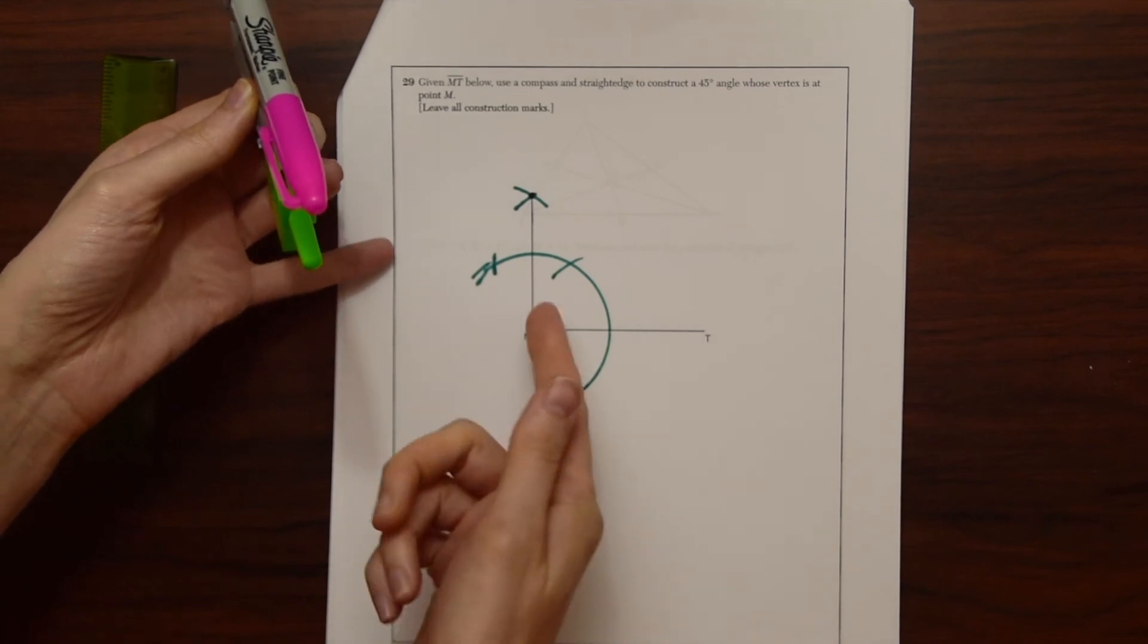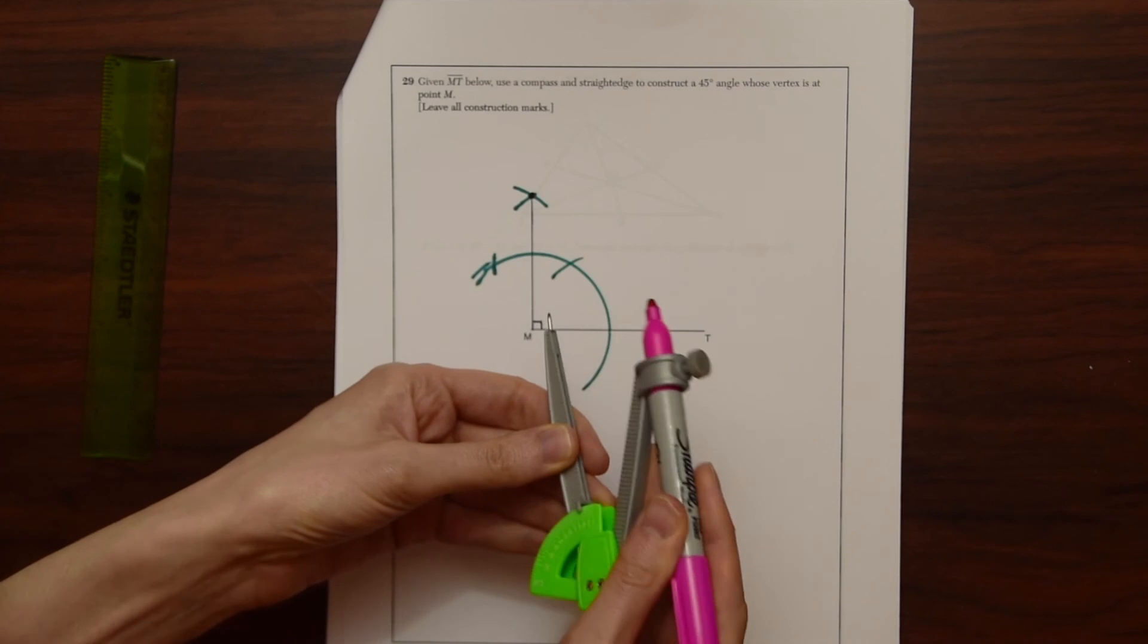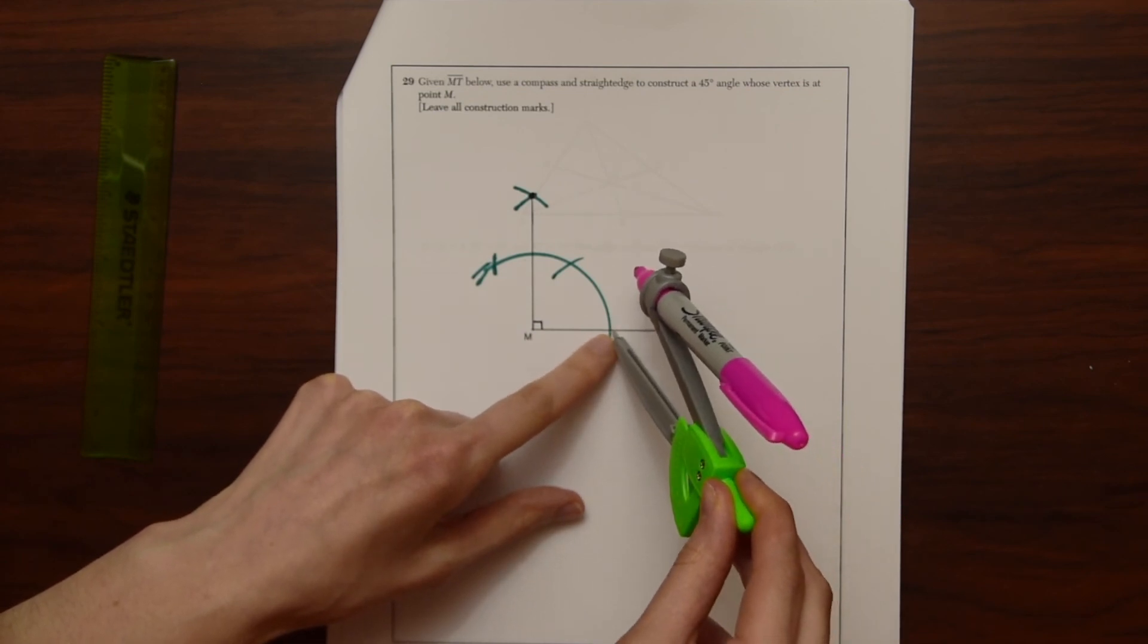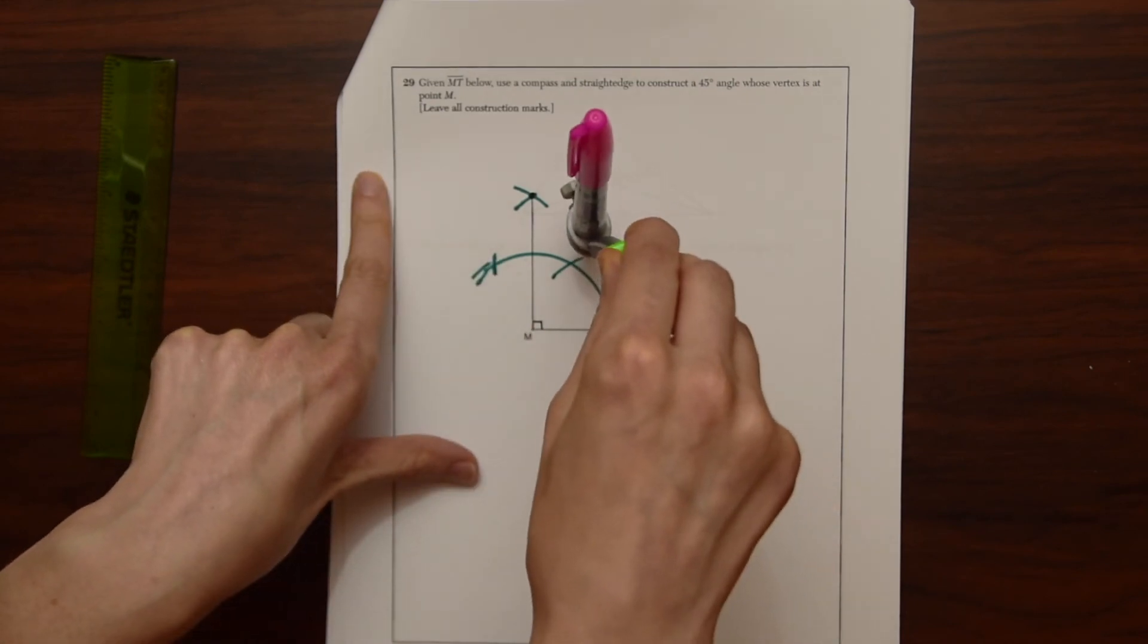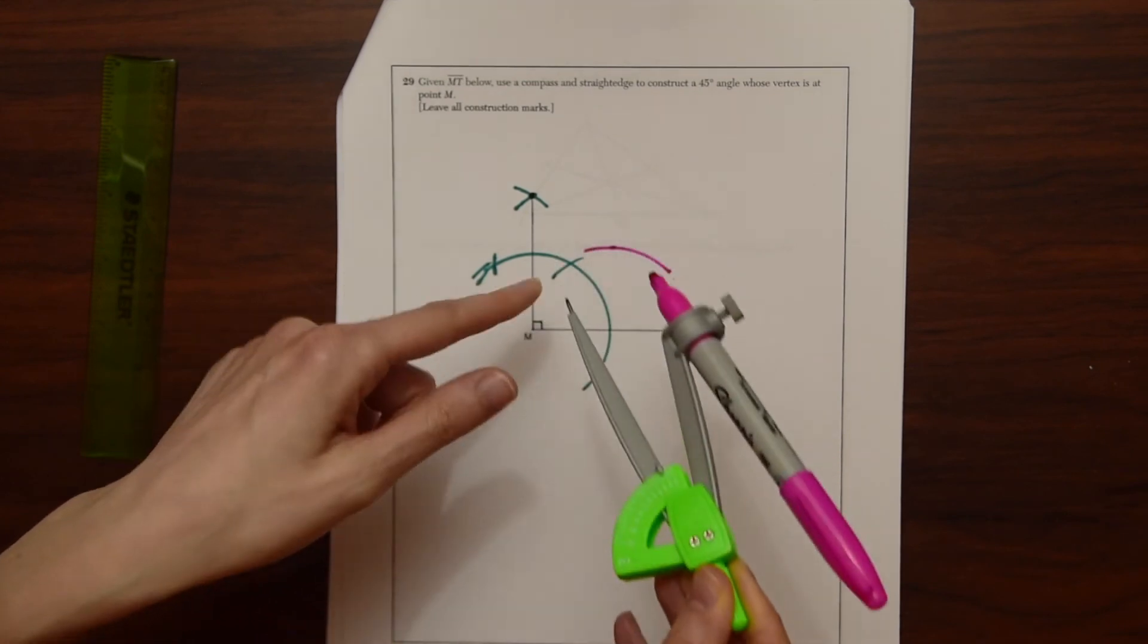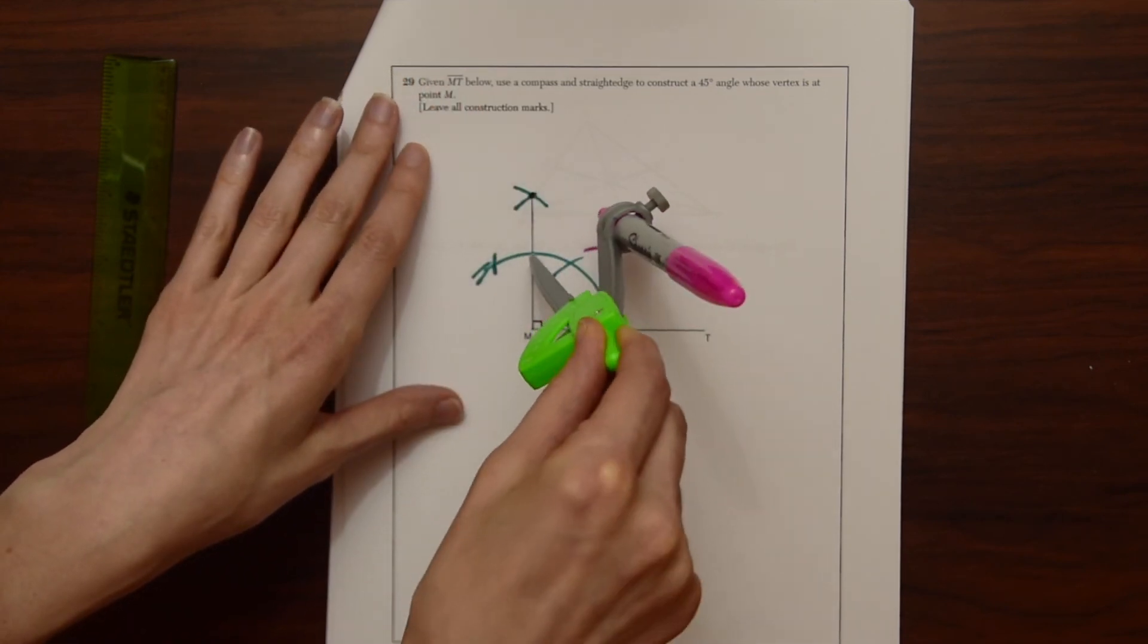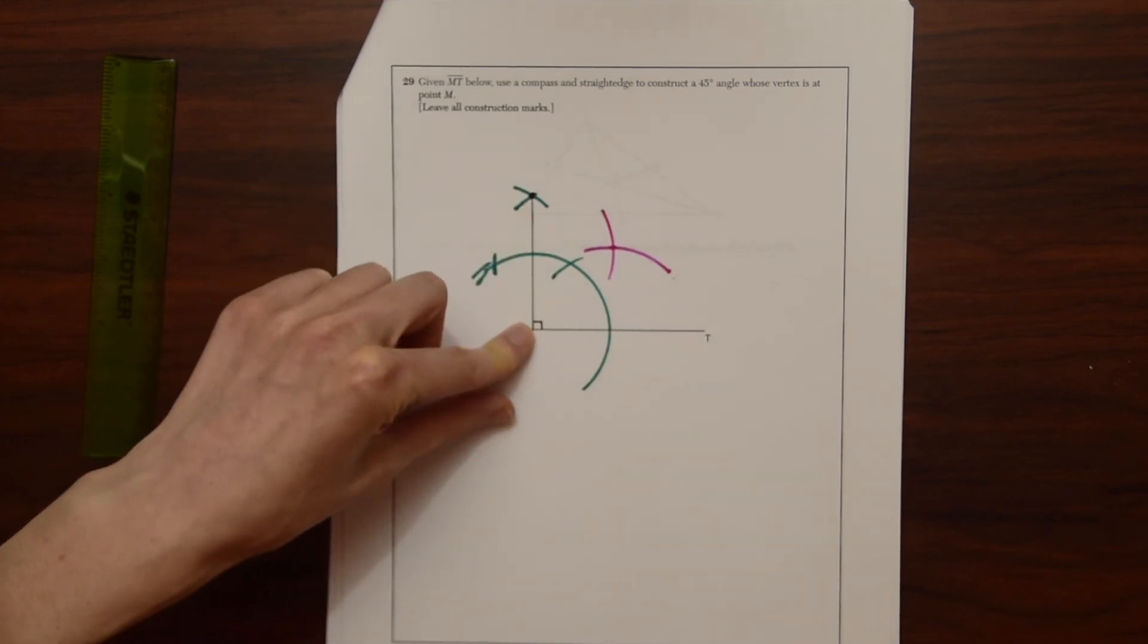We want to split this 90 degree angle in half to get 45 degrees, right? So to split that in half, we're going to take a new value, a new length, doesn't really matter, to begin with and bring the point to one side of our original line and this original mark we made. And we're just going to kind of swing our compass back and forth. And now we're going to take the same point and leaving the same distance in the compass and bring that to the other edge where we have our 90 degree line.